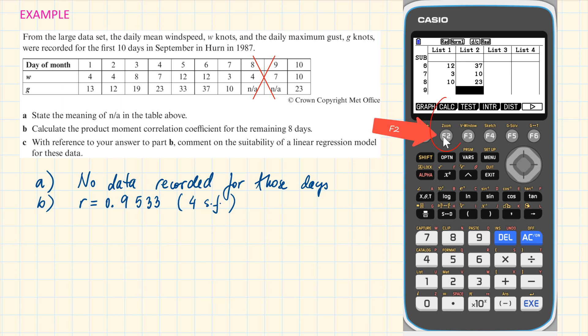Now we choose the option F2, then F3 for regression. Here we are going to choose F1 for X. We choose this because we need a linear regression.